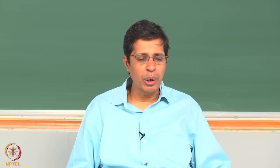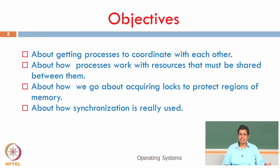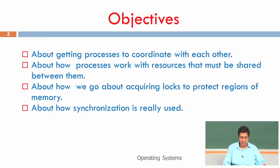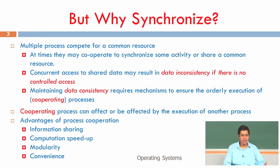The objective of this module is about getting processes to coordinate with each other, about how processes work with resources that must be shared between them, and about how we go about acquiring locks to protect regions of memory. If we do not protect memory, two processes can access it at the same time and make its content inconsistent. We will see examples of how synchronization is really implemented.